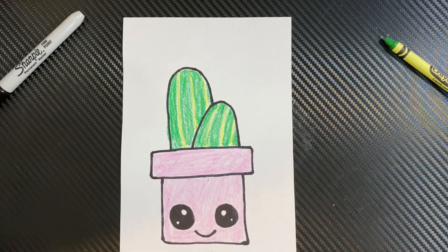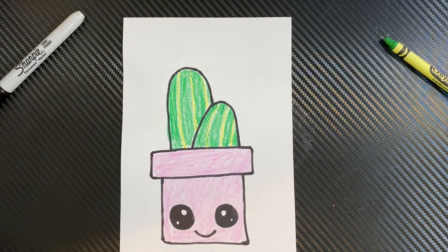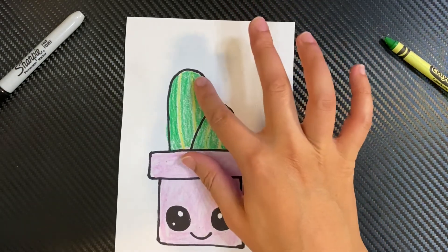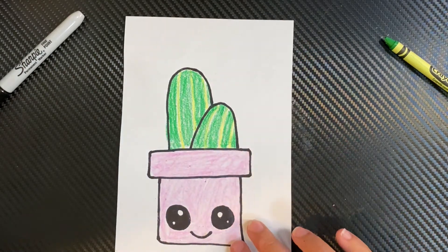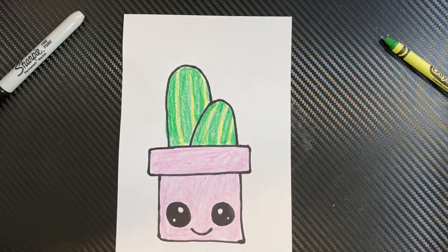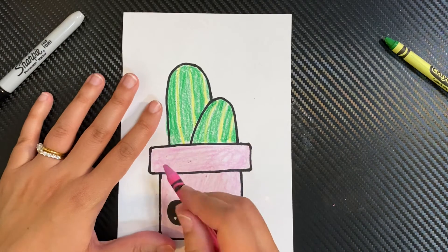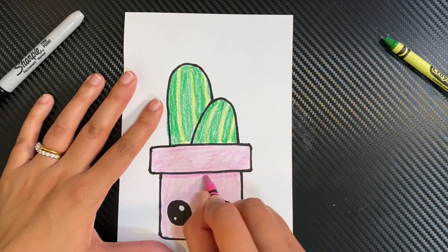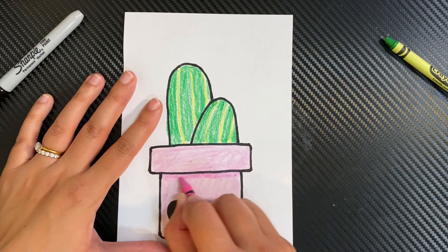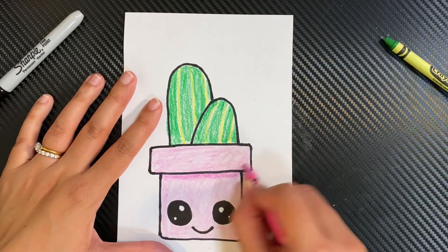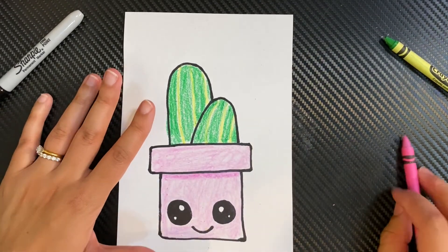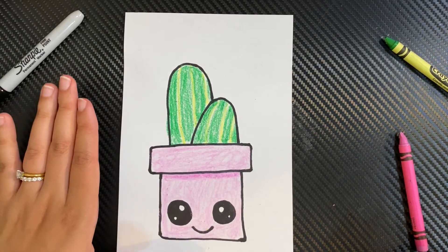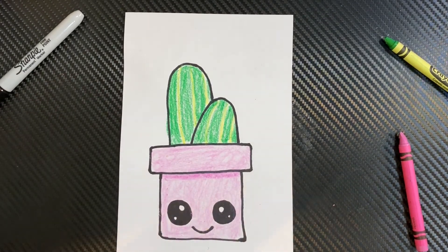So here's our happy cactus. I hope you like it. I put the lines down, like I said, in yellow. If you wanted to even create a shadow underneath, you can make the pink that you use just a little darker and it creates a little shadow underneath the pot. So I hope you subscribe and I will see you next video. Bye.